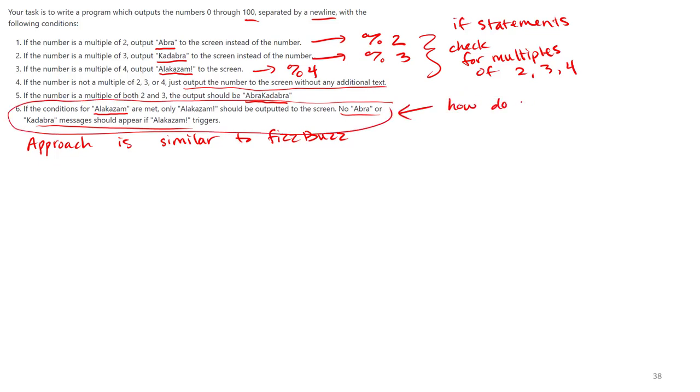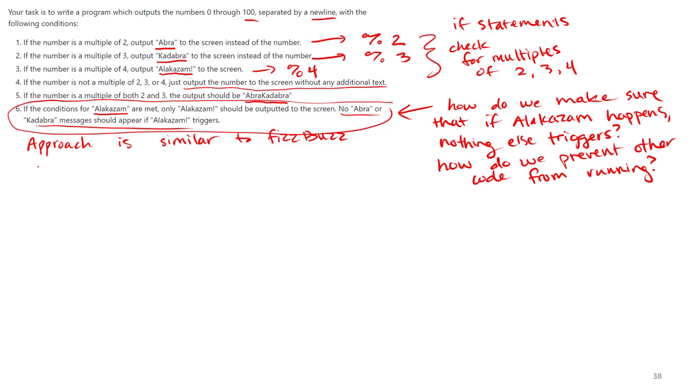How do we make sure that if Alakazam happens, nothing else triggers? Here's a hint. What about an if-else statement? Remember, in an if-statement, the statement protected by the if will only run if the if-statement is true.